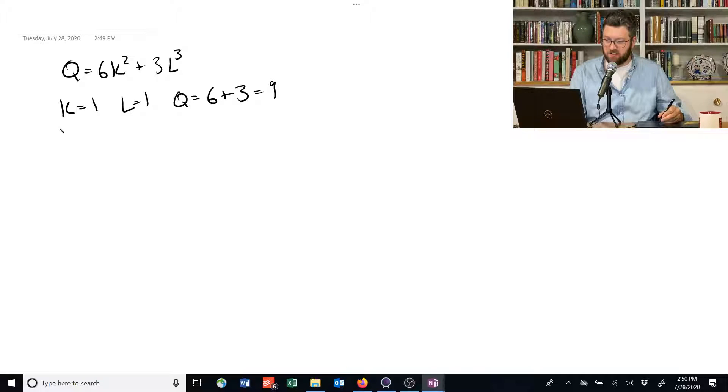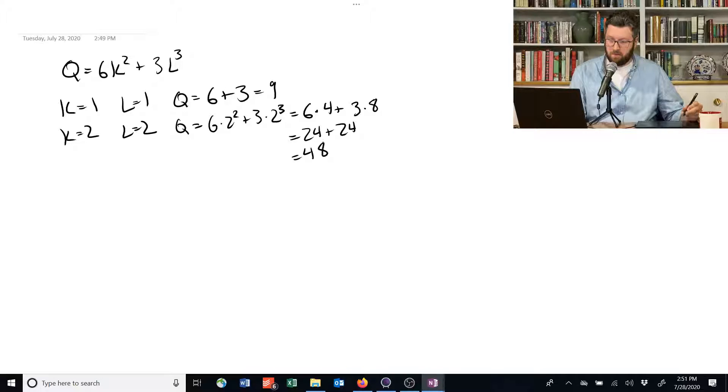And now what if we change it to 2? So if we double all the inputs, do we double the outputs? 6 times 2 squared plus 3 times 2 cubed is equal to 6 times 4 plus 3 times 8. That's equal to 24 plus 24, or 48. 48 is way more than twice 9, and so this thing has increasing returns to scale.